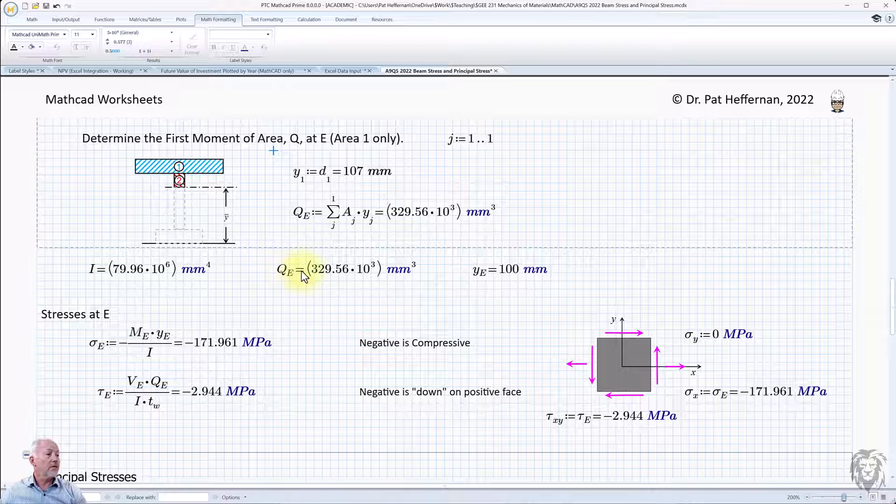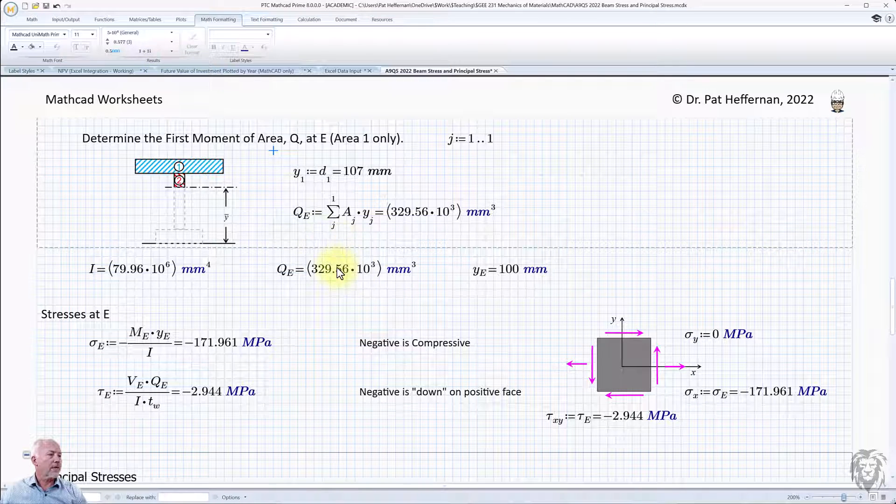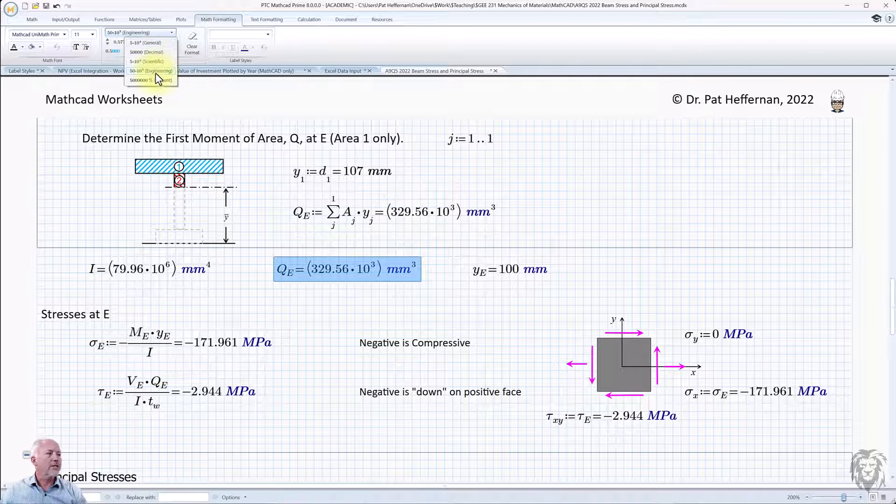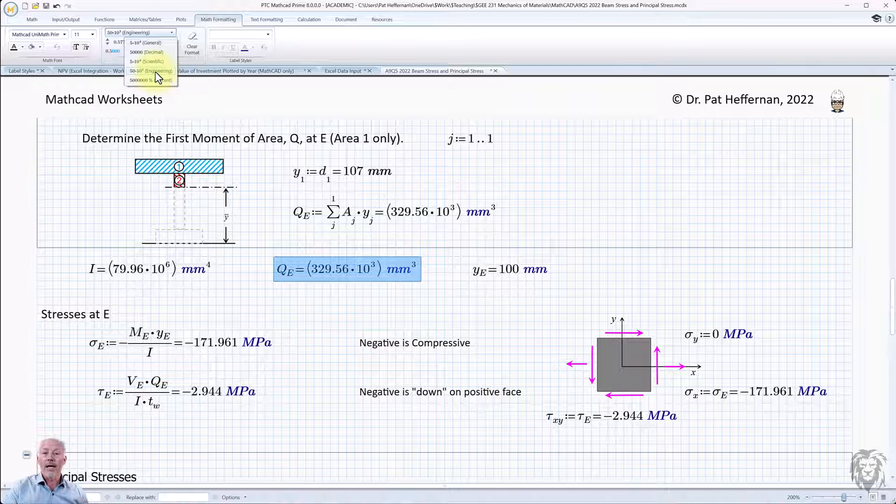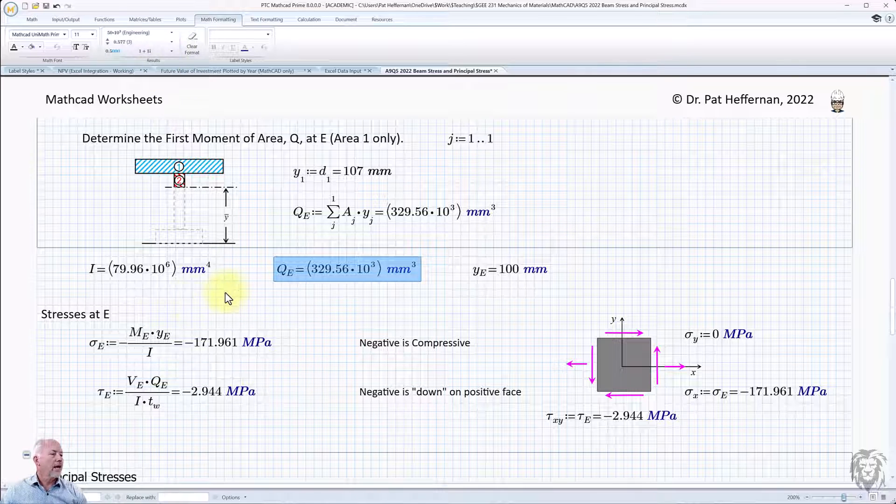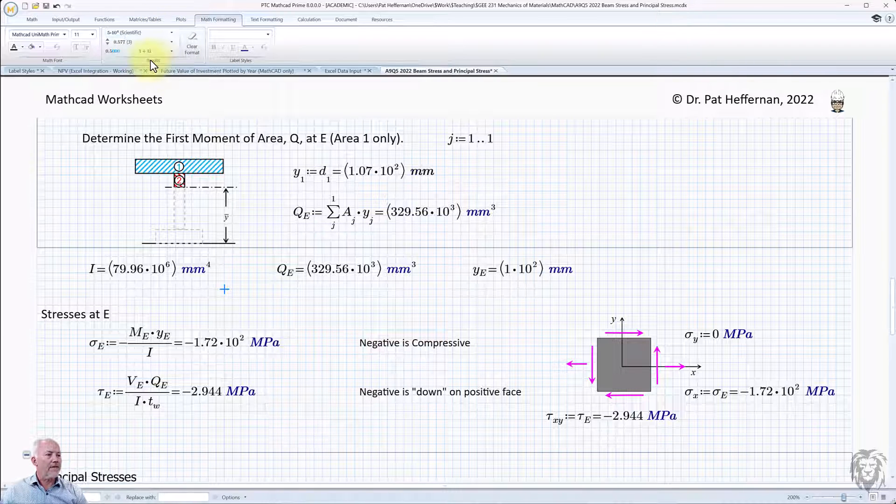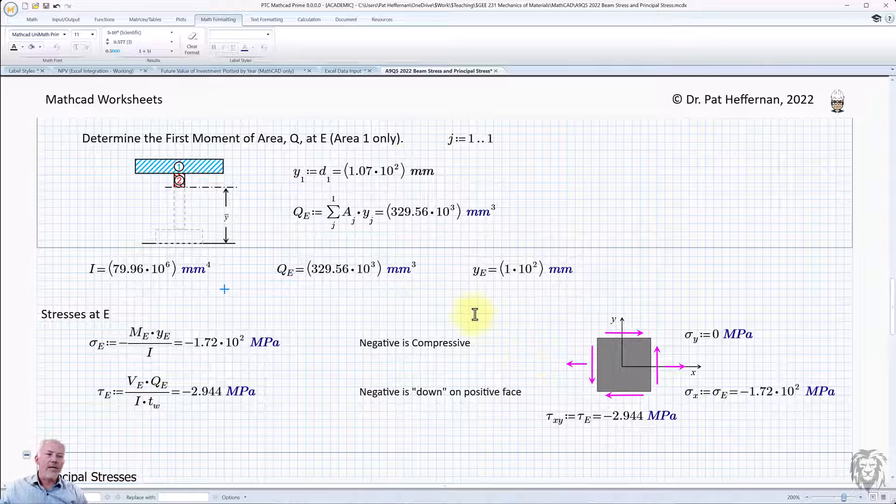And an example here is Q sub E, I believe I've turned that into scientific expression. So the way I would do that, if it wasn't already done, is, or scientific, actually I choose engineering. I, because, particularly because I work in SI units, I like engineering because it comes in, you know, times 10 to the third, times 10 to the sixth, times 10 to the ninth. So I choose engineering. And now, again, if I click out and were to change, say, everything to scientific, you'll notice it updates everything else.